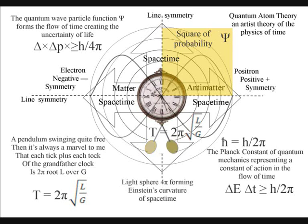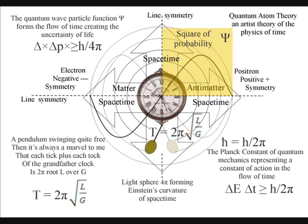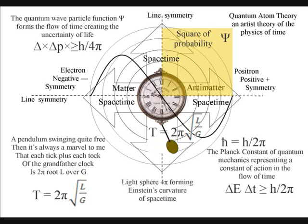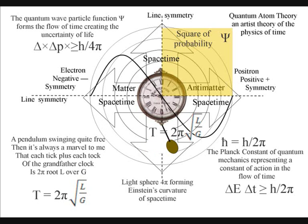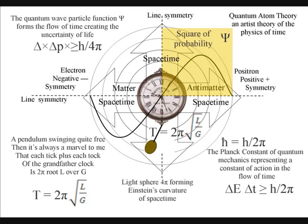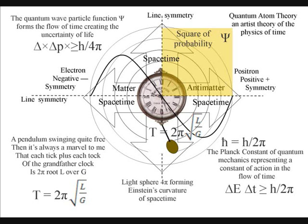This video is different from my previous videos. In my previous videos I explained quantum atom theory and artist theory on the physics of time as a physical process. I did this by using as little mathematics as possible. The mathematics was always there in the diagrams but I tried to make everything as simple as possible in the belief that everyone should be able to understand this theory. This video will explain the mathematics.